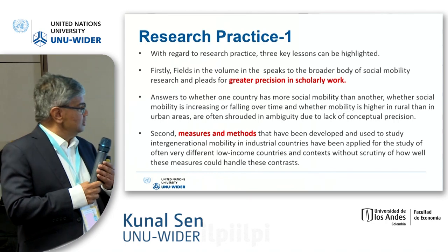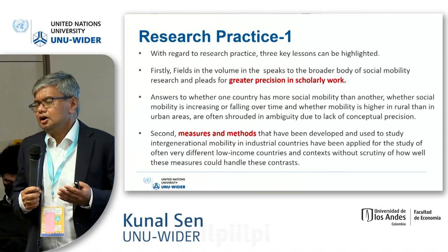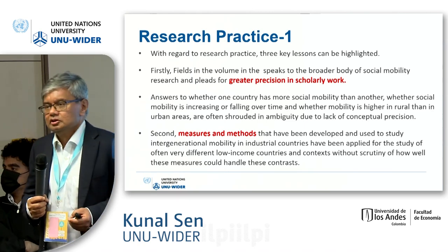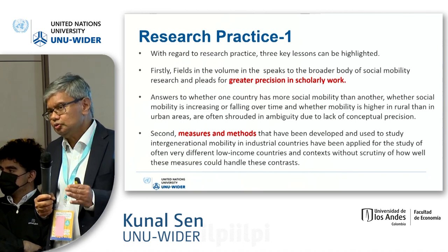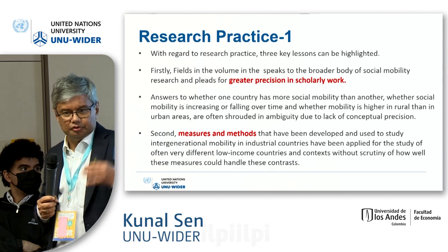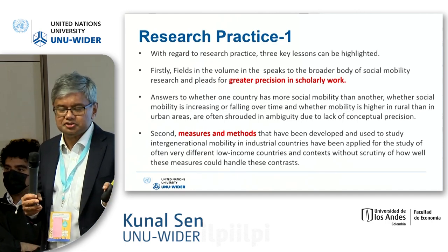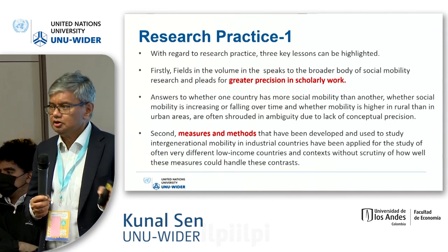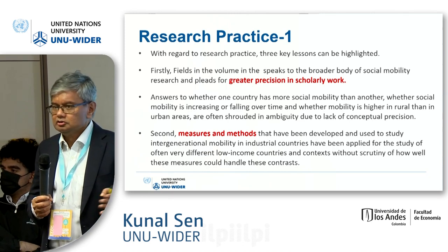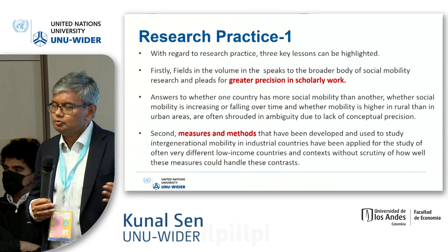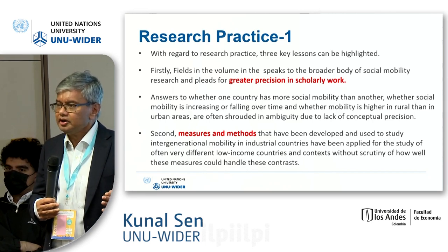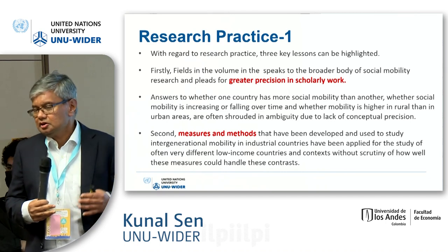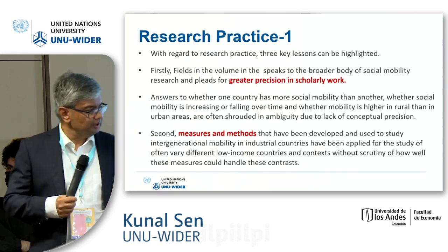The second problem in research practice is that the measures and methods we use often are not really capturing what we want to capture. If you think about IGRCs and IGMs, we seem to treat mobility upward or downward as symmetrical — as if moving up is the same as moving down. But IGRC does not differentiate between upward and downward mobility. Downward mobility in Africa or South Asia in a low-income context is a very different situation than upward mobility. We need to find better ways to capture mobility that take into account the asymmetry between upward and downward mobility.